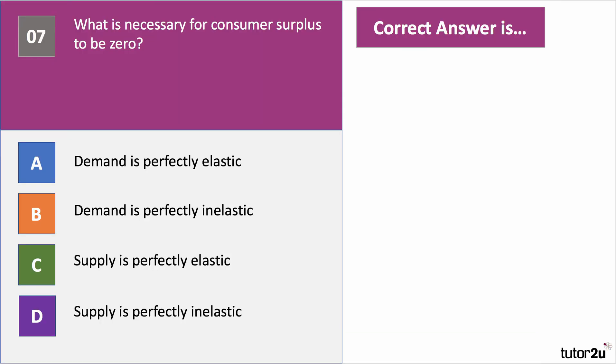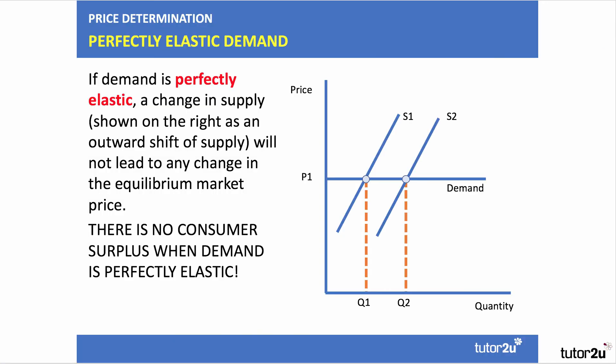Question seven: what is necessary for consumer surplus to be zero? This is about visualising what a demand curve looks like. The correct answer is A. If we have perfectly elastic demand, any change in supply produces no change in price — there's no difference between the price the consumer is willing and able to pay and the price they actually do pay. So there's no consumer surplus when demand is perfectly elastic.